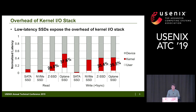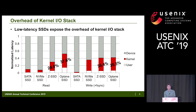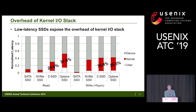This graph shows the breakdown of I/O latency using various SSDs. With slow SSDs, the kernel portion is negligible. However, with ultra-low-latency SSDs, its portion is no longer negligible, taking up to 37% in read and 35% in write. This leads us to optimize the kernel I/O stack to make applications experience such super-fast storage performance.